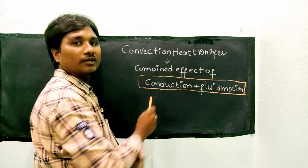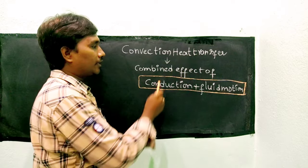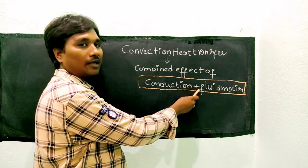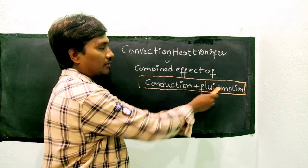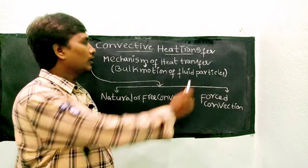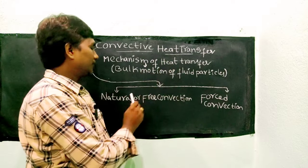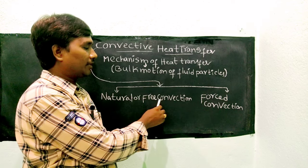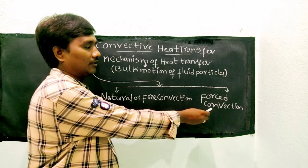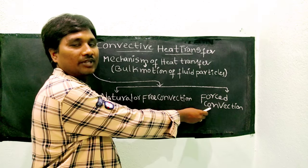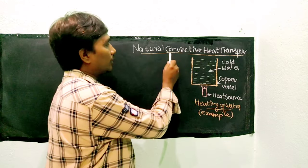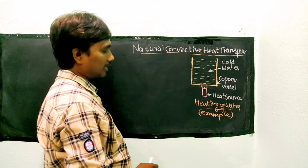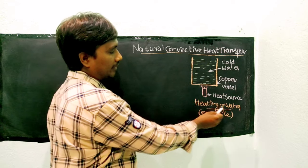Convection heat transfer is a combined effect of conduction plus fluid motion. Convective heat transfer can be classified into two types: natural or free convective heat transfer, and forced convective heat transfer. Natural convective heat transfer is explained with an example of heating of water.